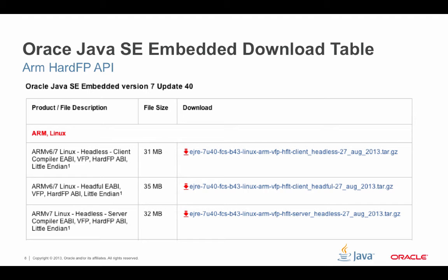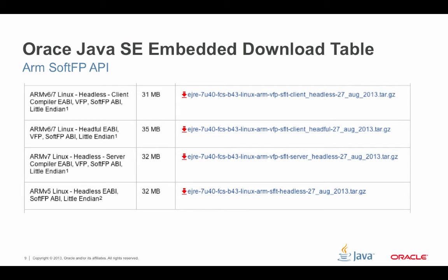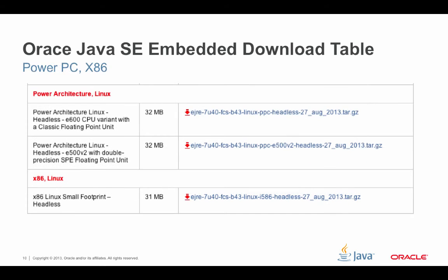A question you may ask is: what if you're on a system that has a soft ABI for ARM 6 and ARM 7? We still support that. Those downloads are still available. As you can see here, there's the same set: headless client, headful client, headless server, and ARM v5 as well. The key point is to know what the underlying hardware supports when downloading Oracle Java SE Embedded. We also still support the PowerPC and x86 architecture.